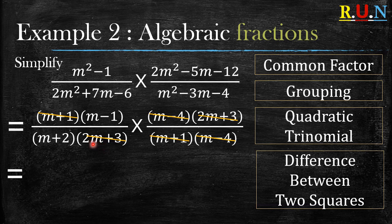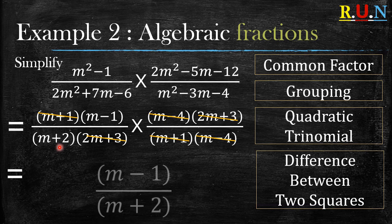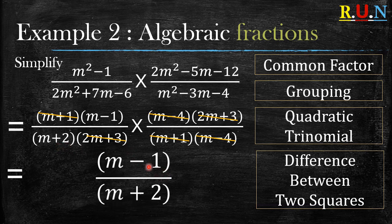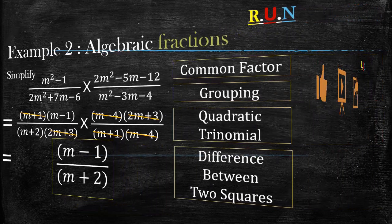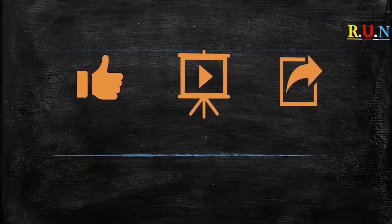Now what are we left with? In the numerator we are left with the bracket m minus 1. In the denominator we are left with m plus 2. We write what we are left with, and just like that you have simplified this algebraic fraction that looked so complicated.